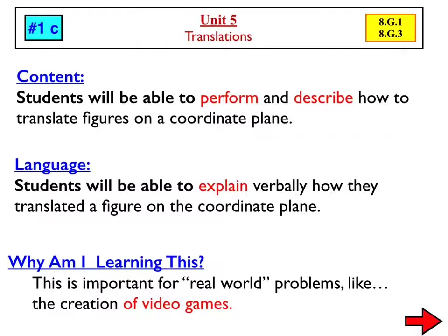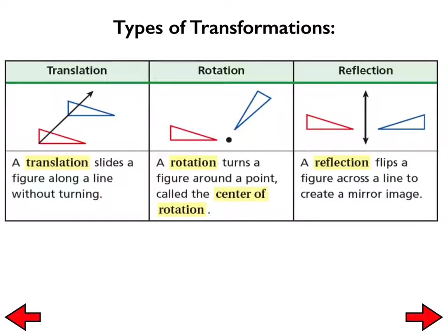Lesson 1C: translations. That's going to be our main focus. There are really four different types of things where shapes move or change, and those are all titled transformations. Today the focus is on translations, which is basically where a figure is sliding along a line without turning. Tomorrow we'll deal with reflections, where a shape is reflected across a line, kind of like a mirror image. And then the next day we will deal with rotations, going more in depth than you may have done last year.